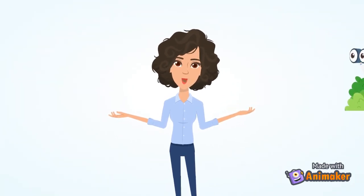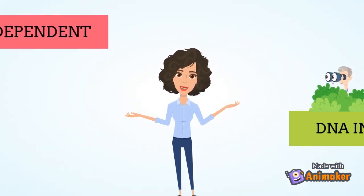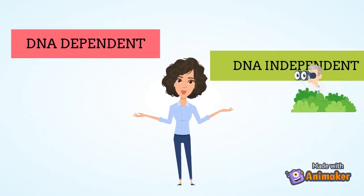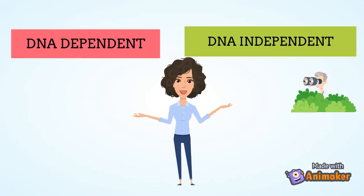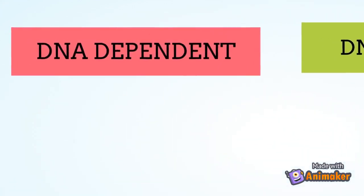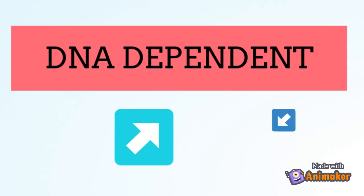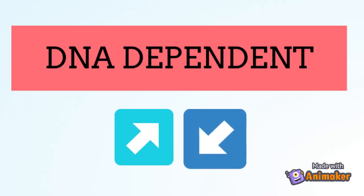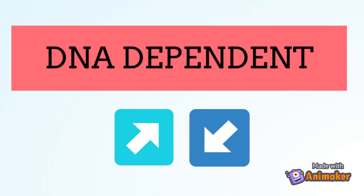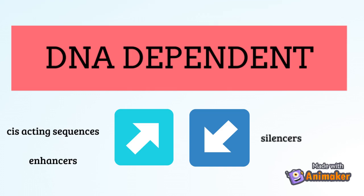Now let's go into the details. There are two types of regulation: DNA-dependent and DNA-independent. DNA-dependent regulation involves sequences in the DNA that will either enhance or reduce the levels of transcription. These DNA sequences include cis-acting sequences, enhancers, and silencers. They are basically additional instructions that tell you how much of that particular gene you want to transcribe.